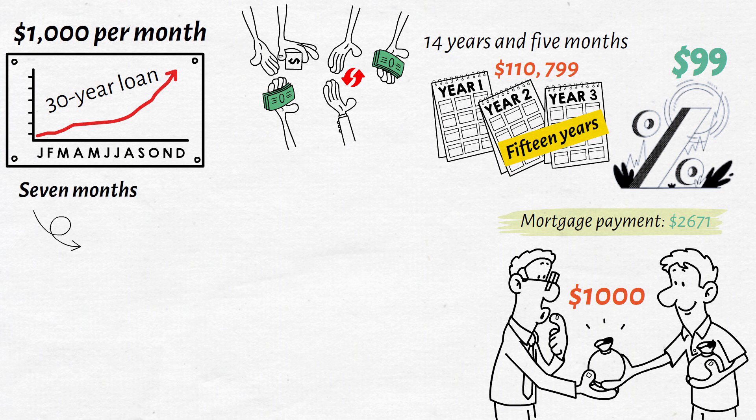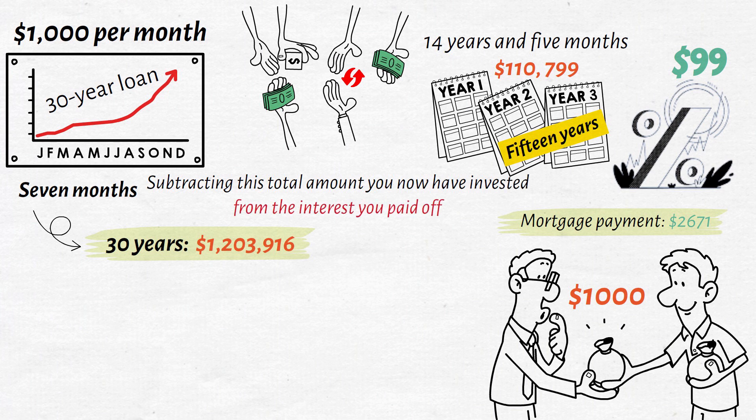The remaining 30 years will total $1,203,916. Subtracting this total amount you now have invested from the interest you paid of $110,799 results in a total of $1,093,117.